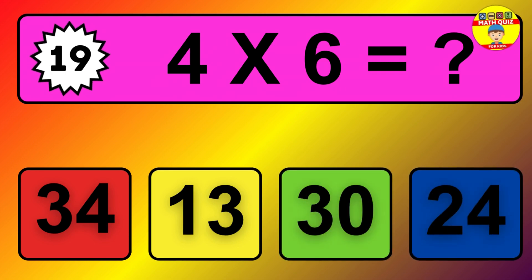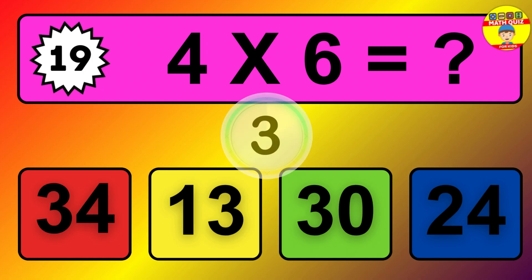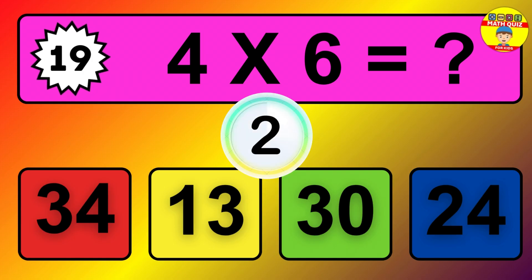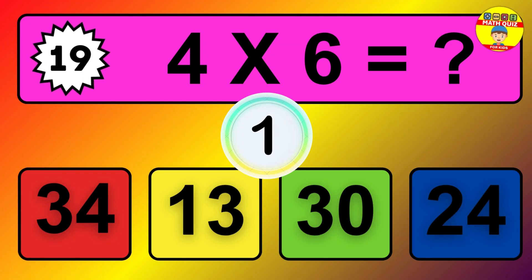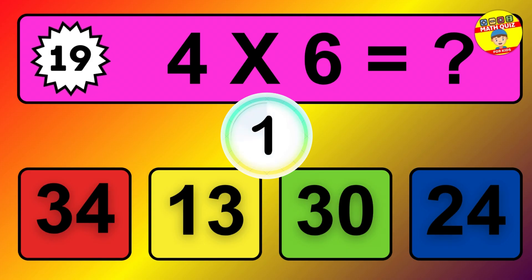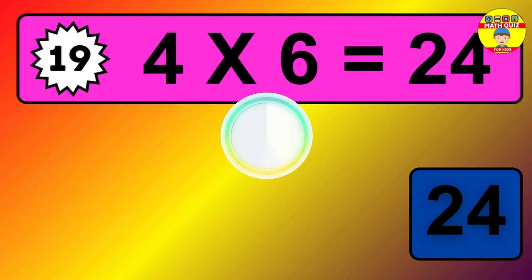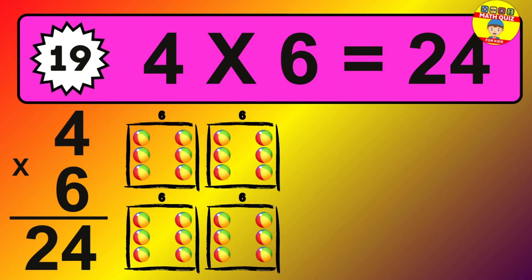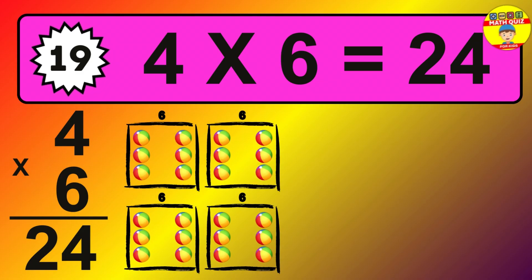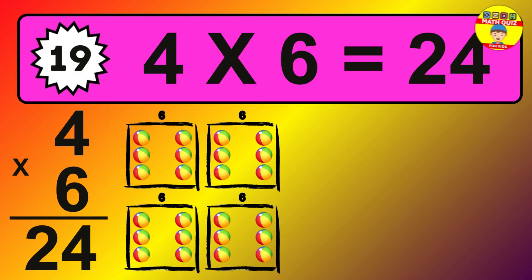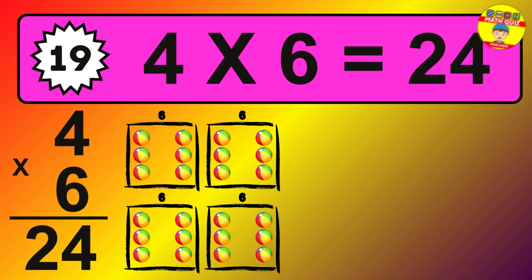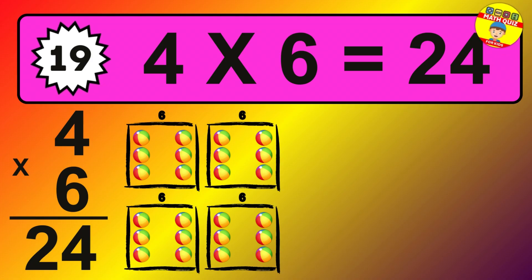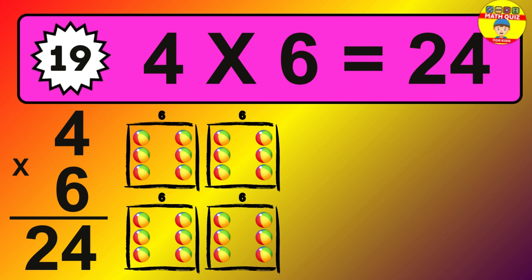Question 19. 4 times 6 equals what? The answer is 4 times 6 is 24. To calculate, we have 4 groups with 6 balls each one. So, how many balls do we have? 24 balls.